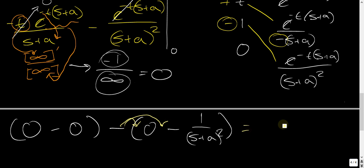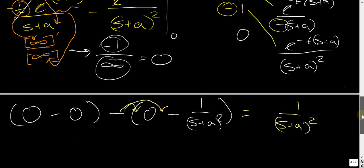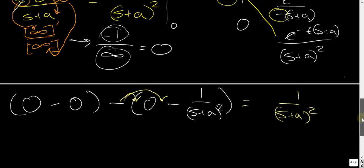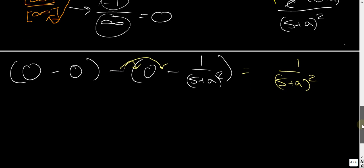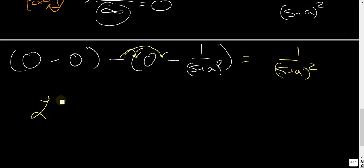And basically, we end up with one over S plus A squared. And that's the brute force way of going about it, or just using the equation to go about it. You could always use the Laplace transform of T is equal to N factorial over S to the N plus one.